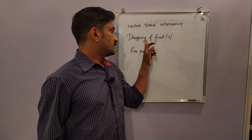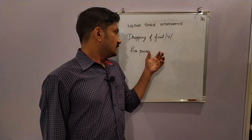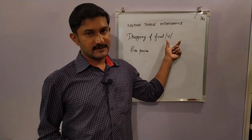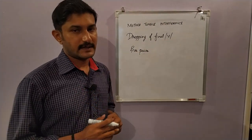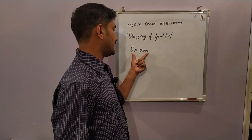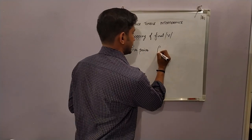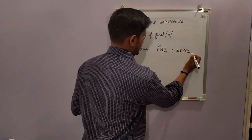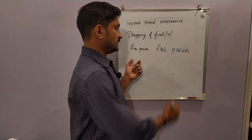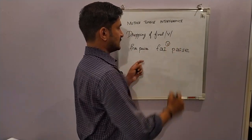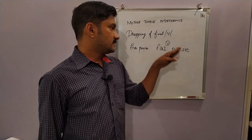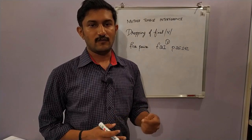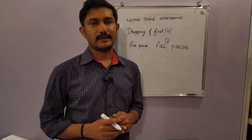Another instance is the dropping of the final 'v' sound. Most Indian speakers have a tendency to drop the 'v' sound from certain words when they occur in combination. Like 'five o'clock' — Indian speakers pronounce it as 'fie o'clock', with the 'v' missing. We unconsciously drop this 'v' sound. It should be 'five o'clock'.